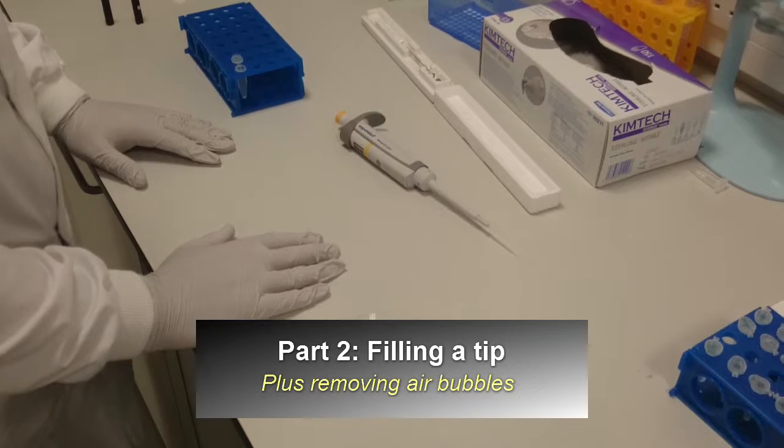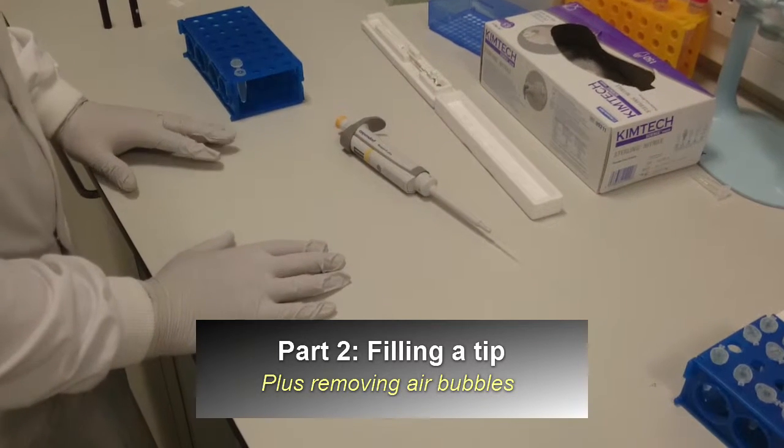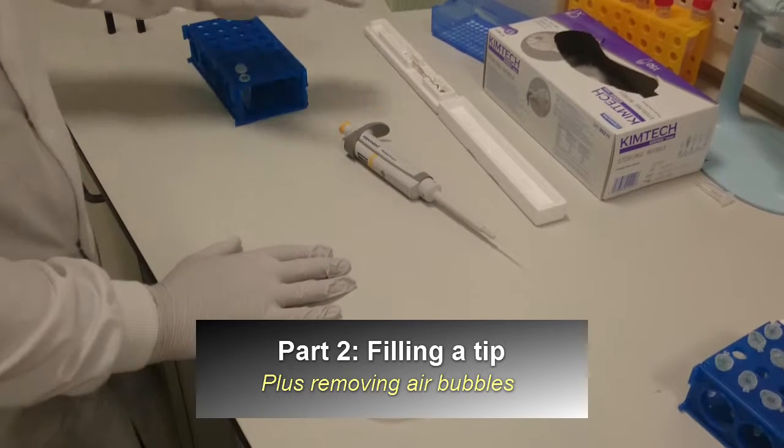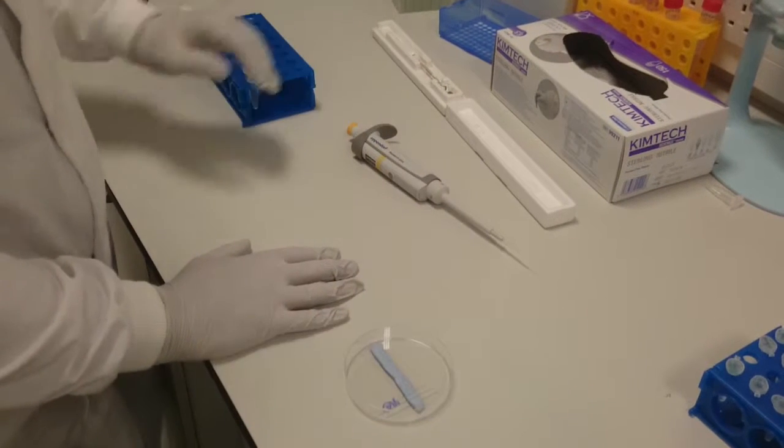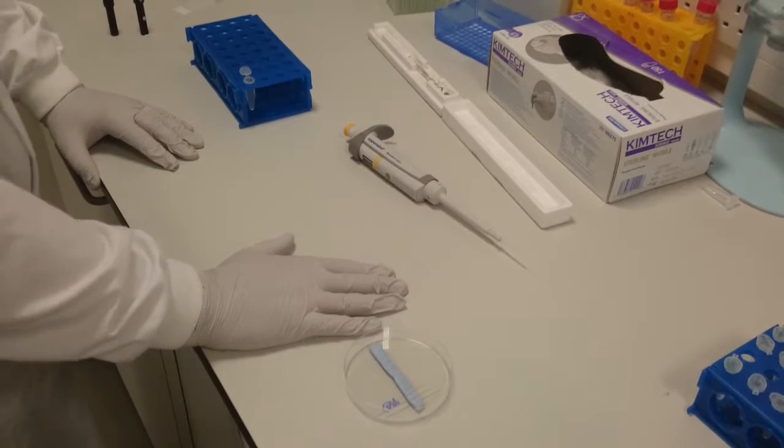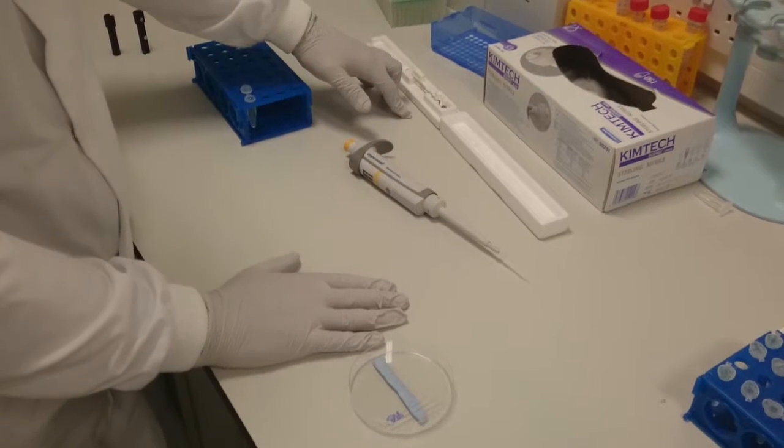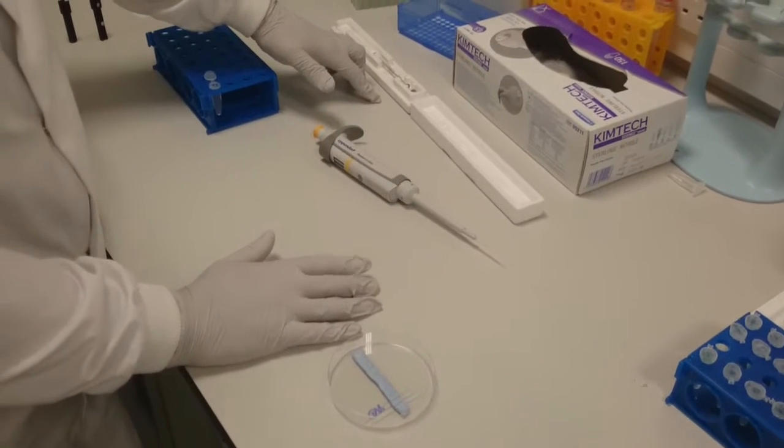Now we've pulled our borosilicate glass tips, I'm going to show you how to introduce sample into them ready for the instrument. I'm going to show you two methods. The first method is using the Hamilton syringe. The other method is using the gel loading tips. Both have their advantages.